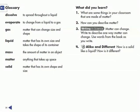Glossary. Dissolve: to spread throughout a liquid. Evaporate: to change from a liquid to a gas. Gas: matter that can change size and shape. Liquid: matter that has its own size and takes the shape of its container. Mass: the amount of matter in an object. Matter: anything that takes up space. Solid: matter that has its own shape and size.